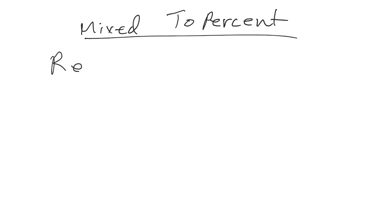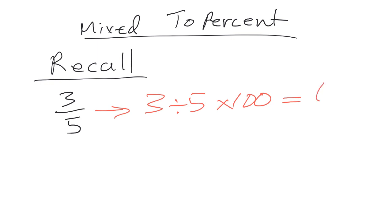Now, let's recall what we did before. When we change something from fraction to percent, all we did was take our number. Let's say we had 3 over 5, and then what we did was 3 divided by 5, then times by 100 to get our percentage, which actually ends up being 60%. So 3 divided by 5 times 100 gives us 60%.